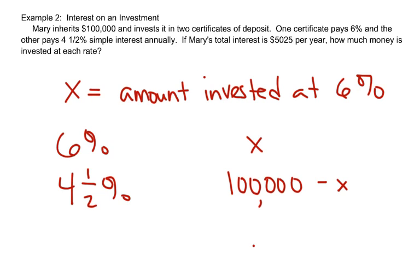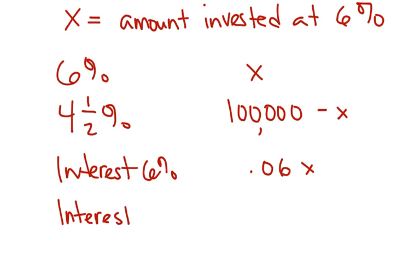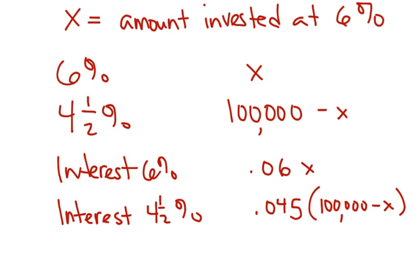So how do you determine the interest? What you do is you take the percent and you change it into a decimal. So the interest on the 6% CD is going to be found by doing 0.06 times X. And the interest found on the 4.5% interest CD, you're going to do 0.045 times 100,000 minus X. And we know that when we add the interest from both of these CDs, it better equal $5,025.